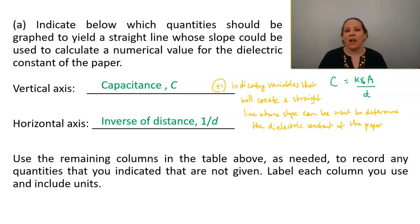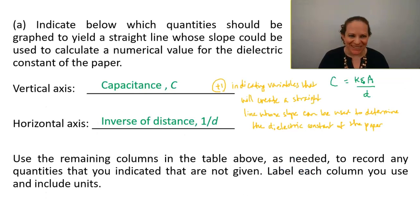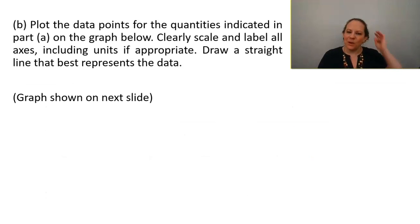So use the remaining columns of the table above as needed to record any quantities that you indicated that are not given. Label each column you use and include units. So here's that data again. So one over D is what I hadn't calculated. So I've put that in here in a different color to help show that we've had to add it.